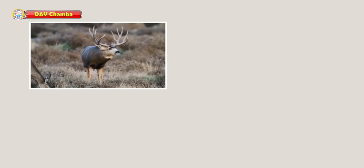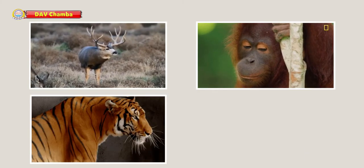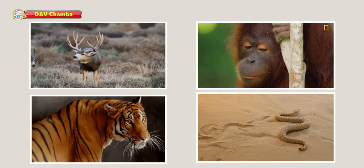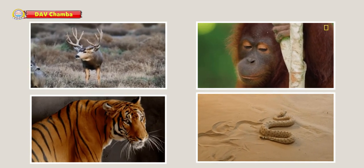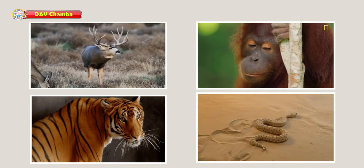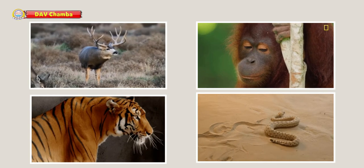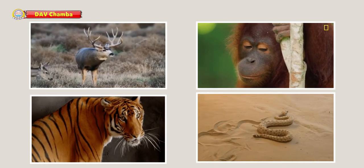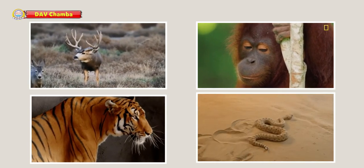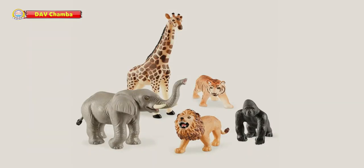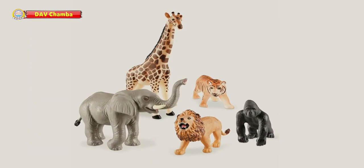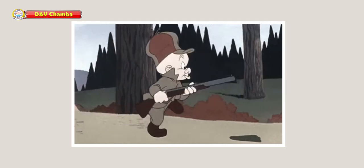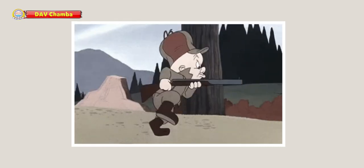Animals like deer, orangutans, tigers, and snakes are shy animals. They are not very friendly with humans and do not like to interact with humans. We humans also try to avoid most of such animals. Mostly wild animals are shy animals, at least where humans are concerned. They learn from their parents to be very mistrustful of humans.